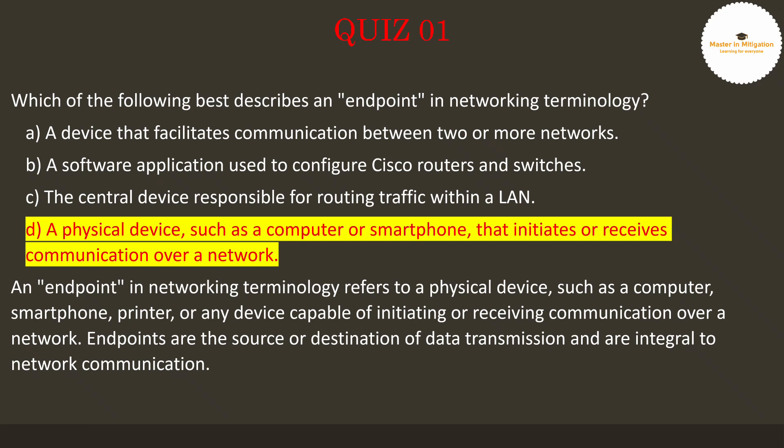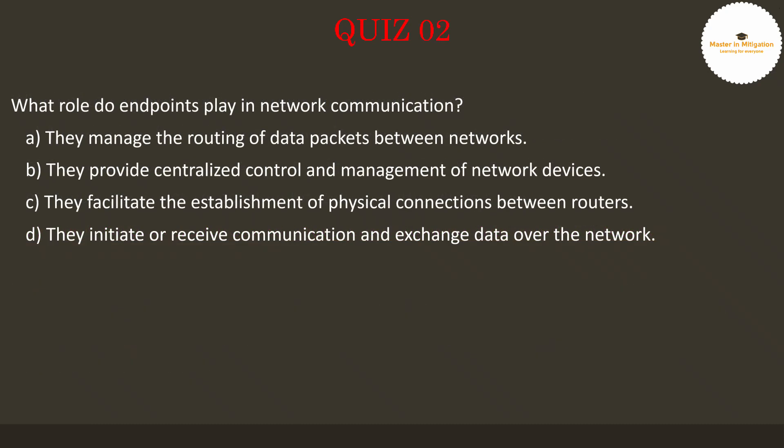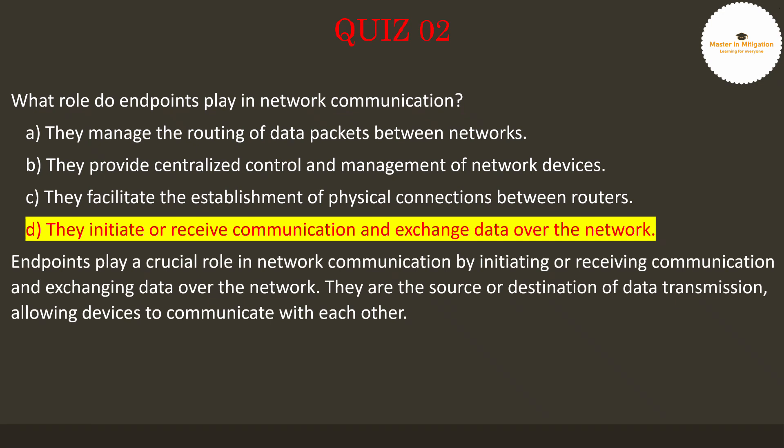Let's go to question 2. What role do endpoints play in network communication? Pause the video now to select the best answer. The answer is D — they initiate or receive communication and exchange data over the network. Endpoints play a crucial role in network communication by initiating or receiving communication and exchanging data. They are the source or destination of data transmission, allowing devices to communicate with each other.